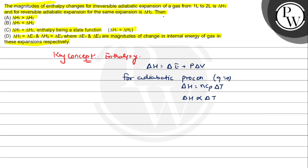Now, for the two given conditions with expansion from 1 liter to 2 liters, the magnitude of work done in a reversible process is always greater than in an irreversible process. Therefore, the final temperature for the reversible process is always less than the final temperature for the irreversible process.